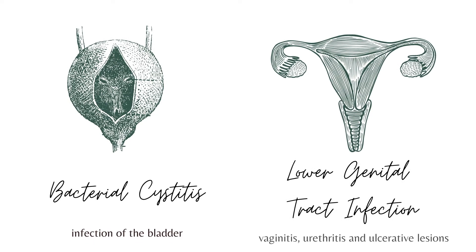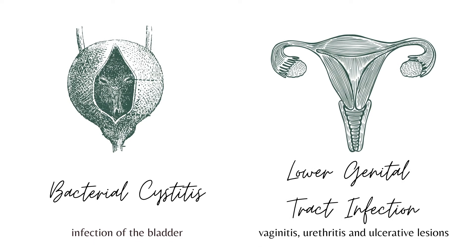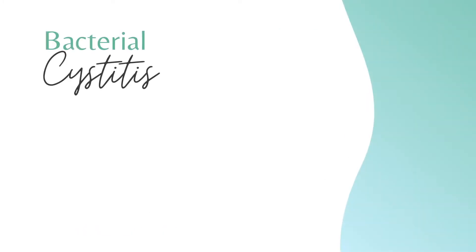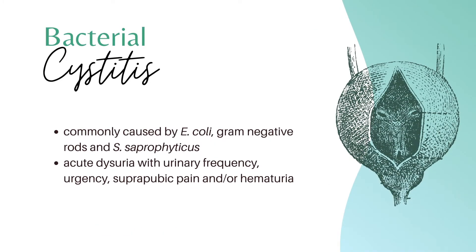There are two broad groups of causes of dysuria in women. First is bacterial cystitis, which is a lower urinary tract infection, and lower genital tract infections, which includes vaginitis, urethritis, and ulcerative lesions. Bacterial cystitis is commonly caused by E. coli and other gram-negative rods as well as Staphylococcus saprophyticus.